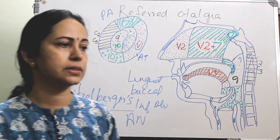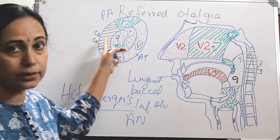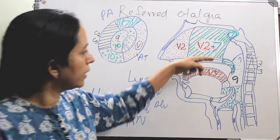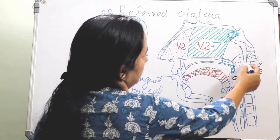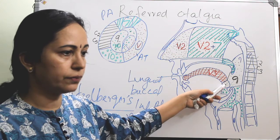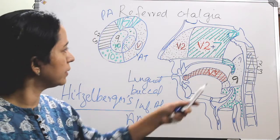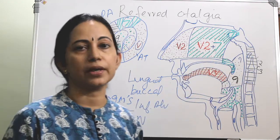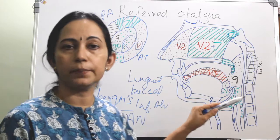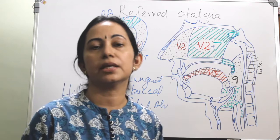And the ninth nerve — its sensory projections include the posterior one-third of the tongue, tonsillar pillars, tonsillar bed, inferior nasopharynx, parapharyngeal space, and retropharyngeal space. So even a parapharyngeal abscess can cause referred otalgia through the ninth nerve.